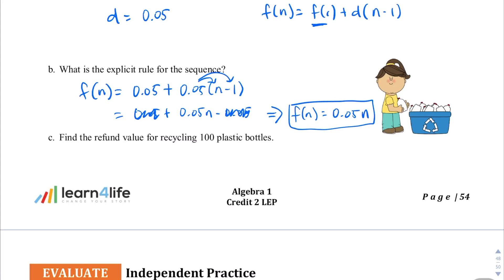Find the refund value of recycling 100 plastic bottles. Well, let's plug it in. 100. f(100) equals 0.05 times 100. And if we multiply that out, we get $5 to be our answer. The cost of refunding 100 plastic bottles is $5.